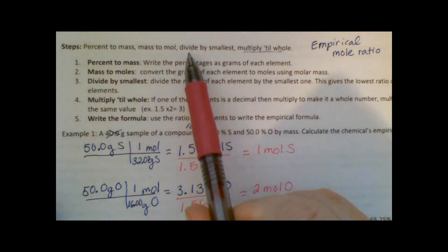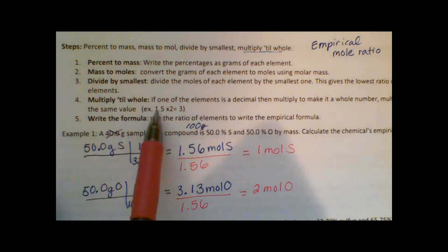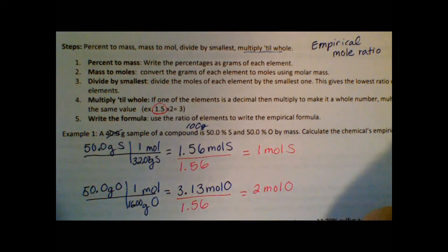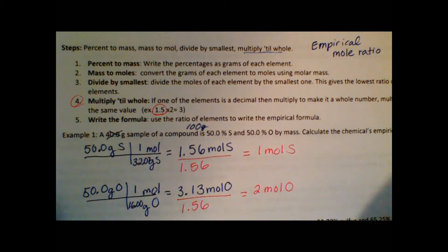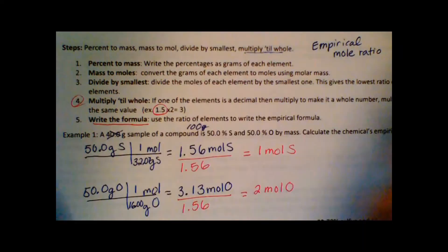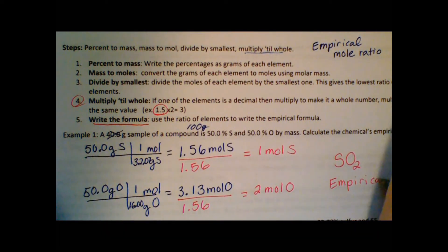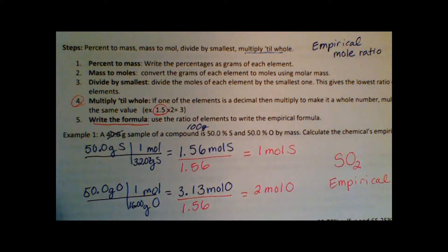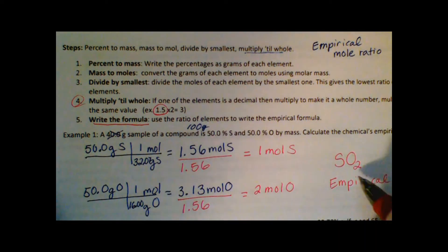If dividing by the smallest gives a non-whole number like 1.5, we would do step 4 and multiply to a whole — but we don't need that here. Our answer is the formula itself: one sulfur for every two oxygens. The empirical formula is SO2. We don't know yet if the molecular formula is SO2, S2O4, S3O6, or another multiple — we only have the element ratio.